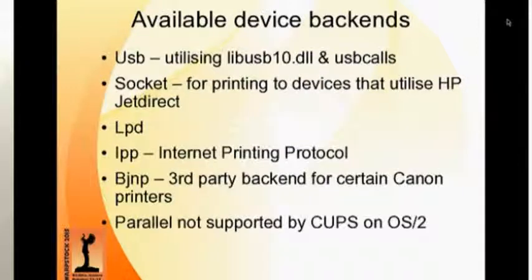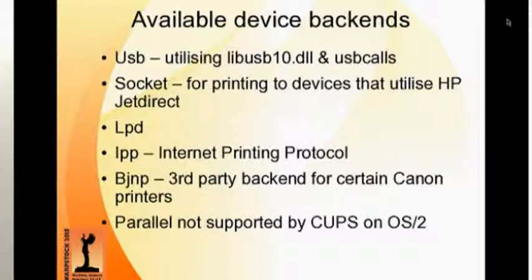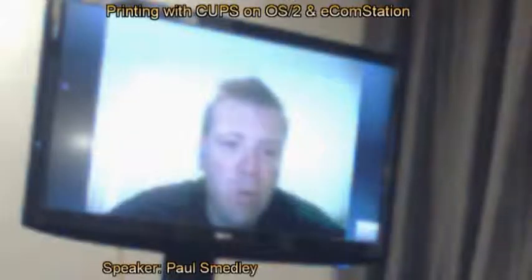In terms of connection methods available with CUPS: USB, which uses LibUSB-1.0 and USB calls; socket printing for printers that use HP JetDirect; LPD, the line printer daemon, which OS/2 supports quite well with the SLPR port driver; IPP, Internet Printing Protocol; and BJNP, the bubble jet protocol for certain Canon wireless printers. Parallel port support exists in the source on Linux, but would require a lot of rewriting to get working on OS/2.